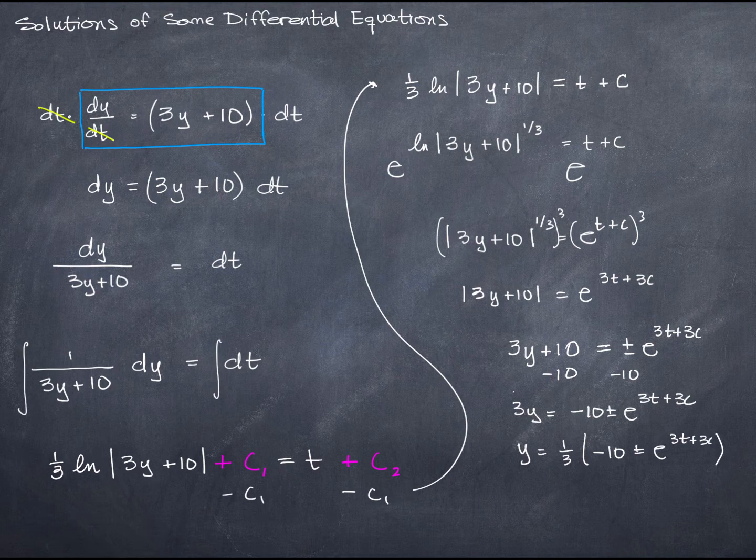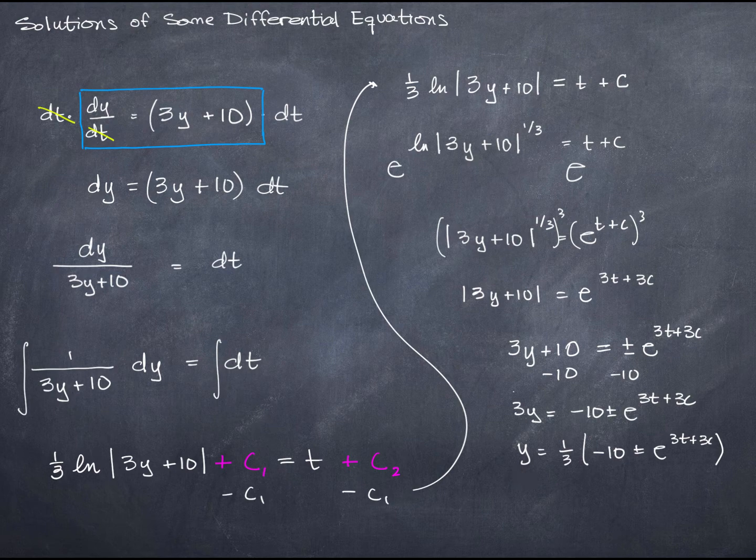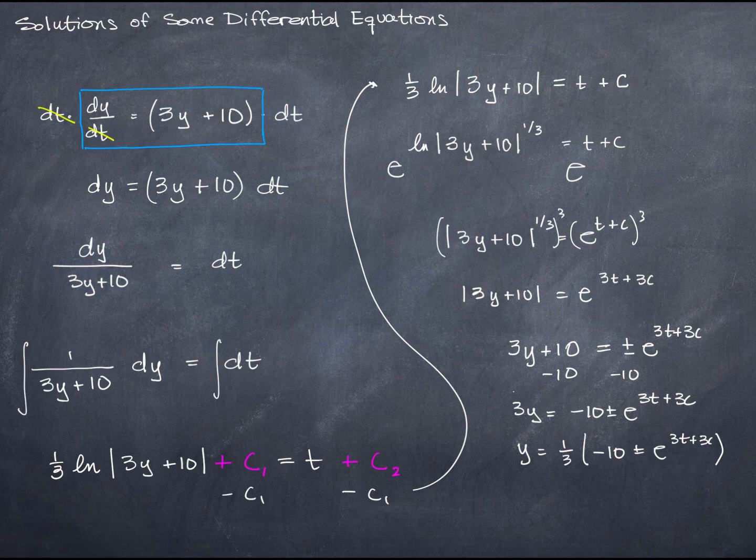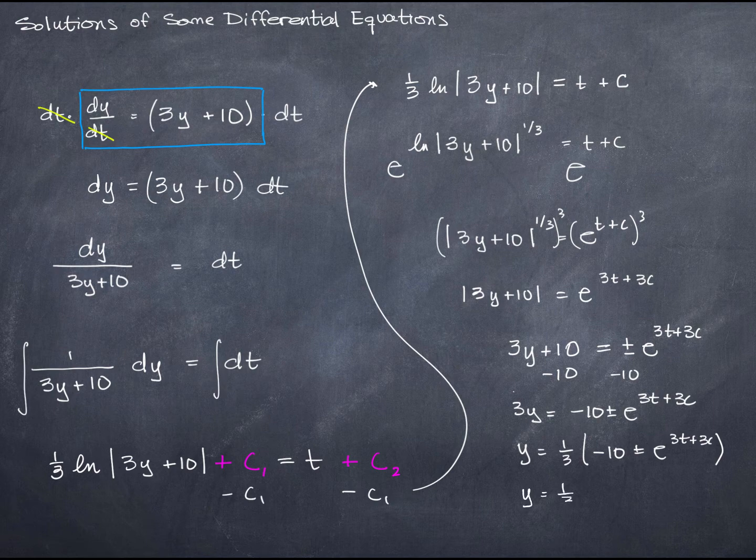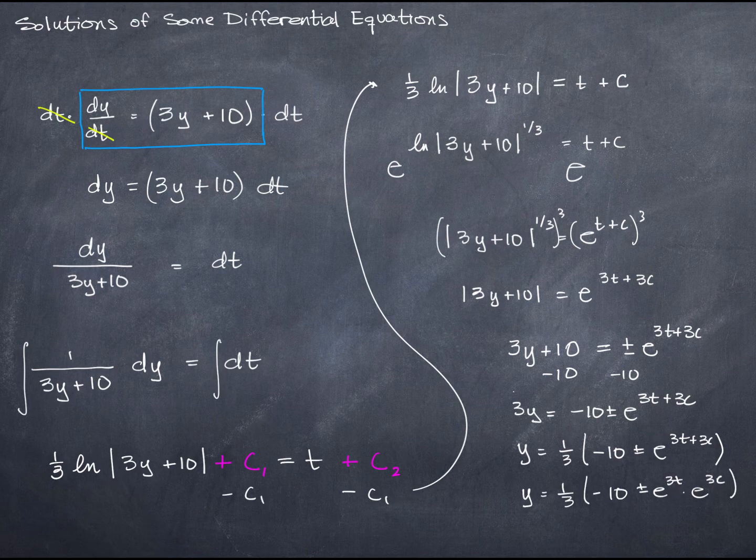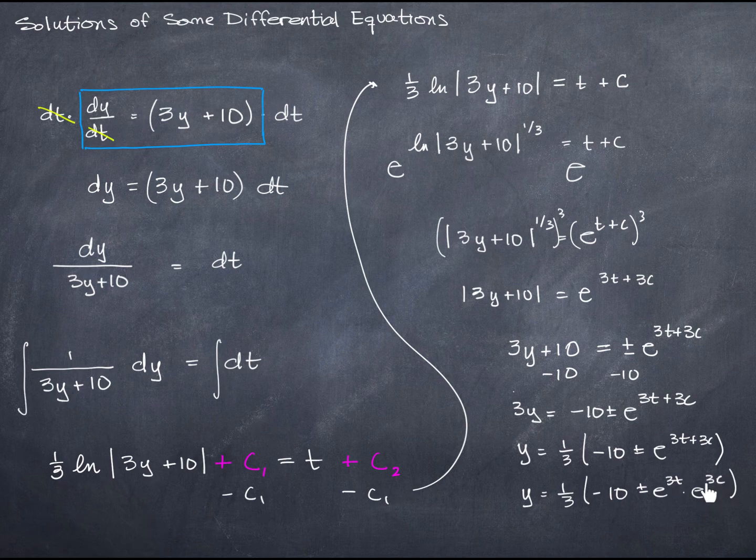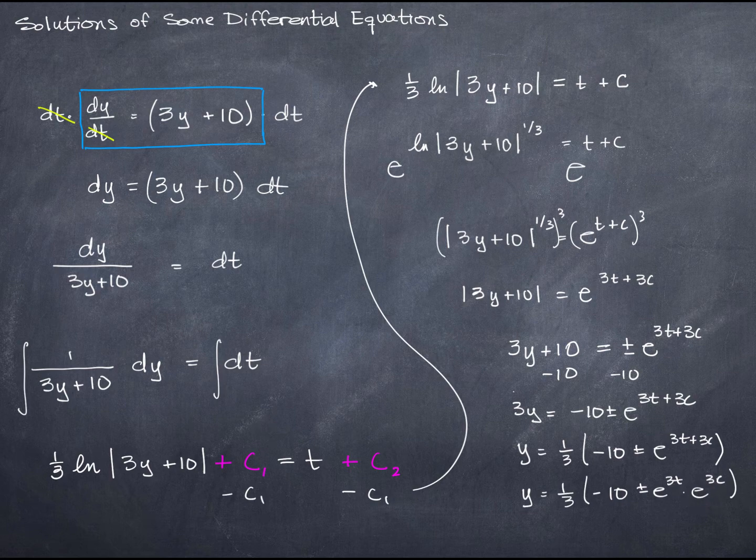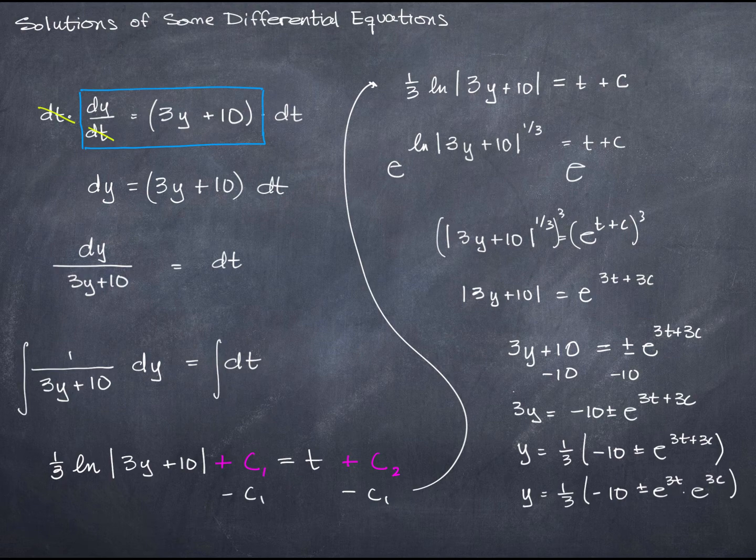So now I have an equation written as y in terms of t. But I have one more thing that I can do here. Notice that e to the 3t plus 3c can be written as e to the 3t times e to the 3c. But guess what? e to the 3c is a constant. e is a constant. e to a power is a constant. e to a numerical power is a constant. And c is a constant. So I'm going to call e to the 3c here capital C, I guess, for lack of anything else. That's what your textbook does as well.